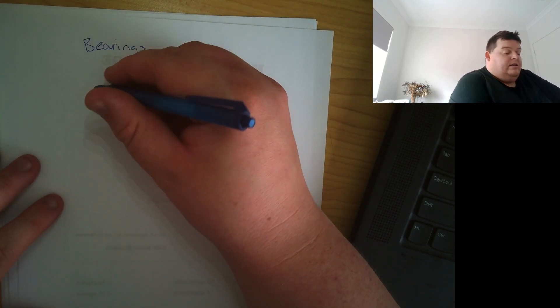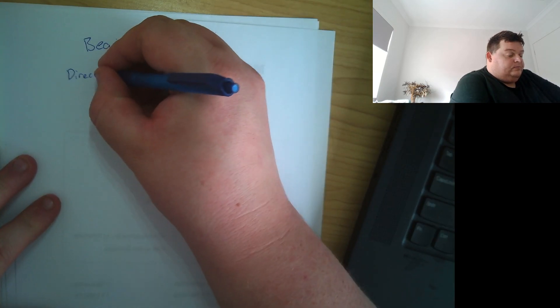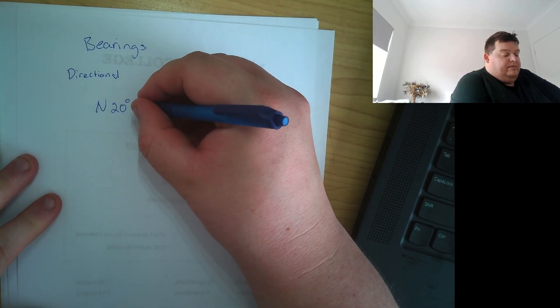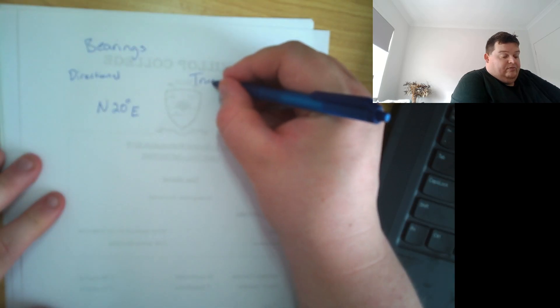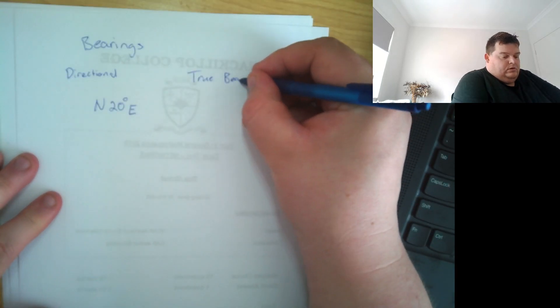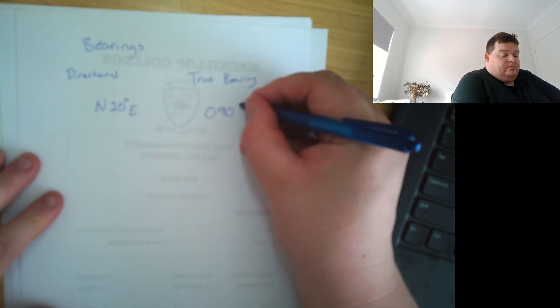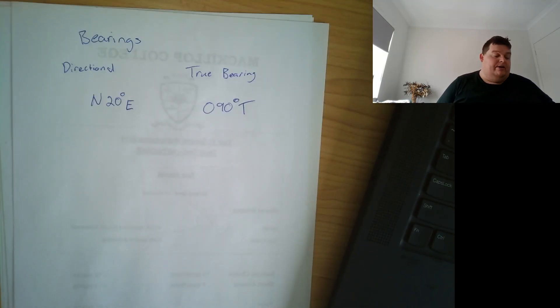So in bearings we talk about there being a directional bearing which is like north 20 degrees east, or there's a true bearing which is one that we sort of look at, which is a three-digit bearing that's out of 360 that helps describe where you're going.